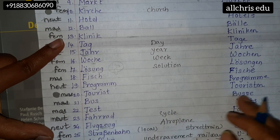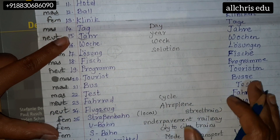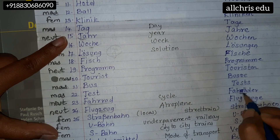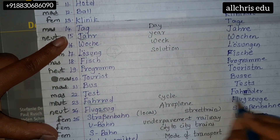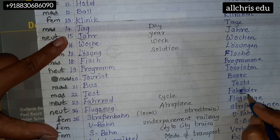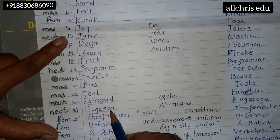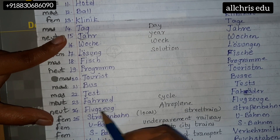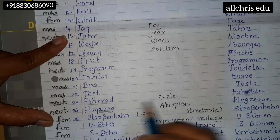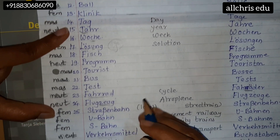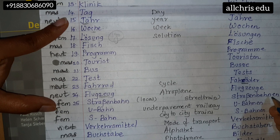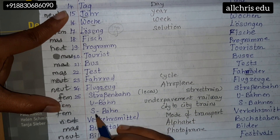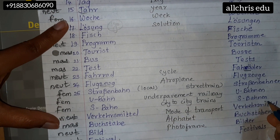Bus — 'oo' sound. Bus, Busse. Rad — 'a' with two dots like a goat. Rad, Räder — 'ra' and 'ray'. Flugzeug — 'zoi' sound. Flugzeug. Straßenbahn. U-Bahn. S-Bahn.